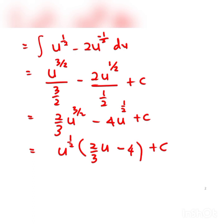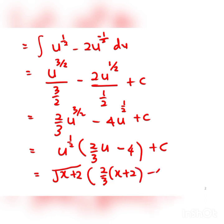One more time, substitute back what u is. Our u was x plus 2, so we write the square root of (x plus 2), and then this becomes 2/3 times (x plus 2) minus 4, plus c. You can simplify further inside the bracket, or leave it here. That's the solution of Example 9.